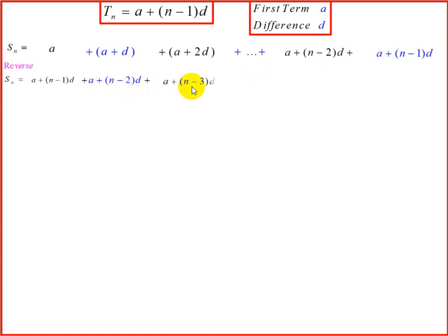Our third last term will be a plus n minus 3d, and this will continue. So we're going to indicate that with three dots, and then the first term becomes the last term in this reversed series.